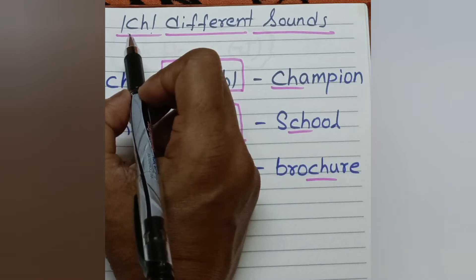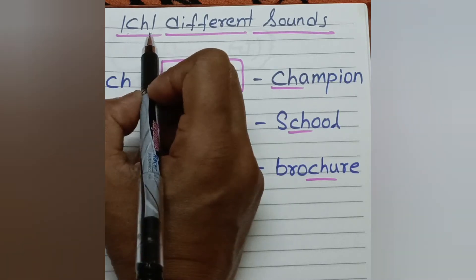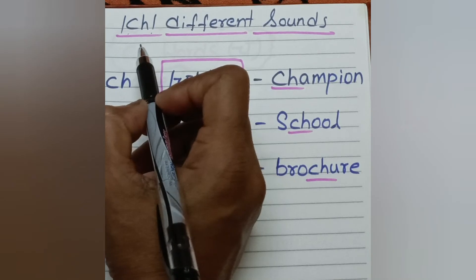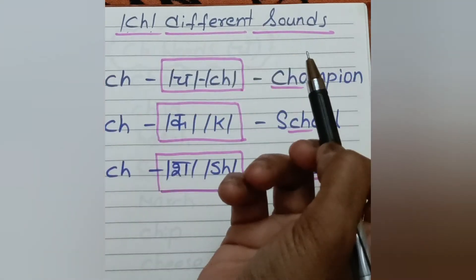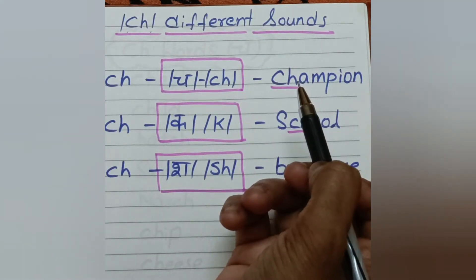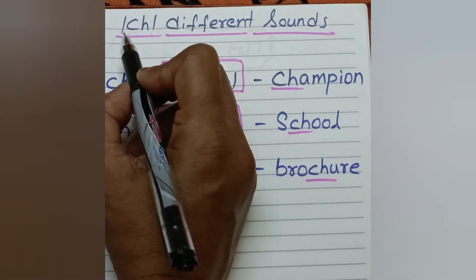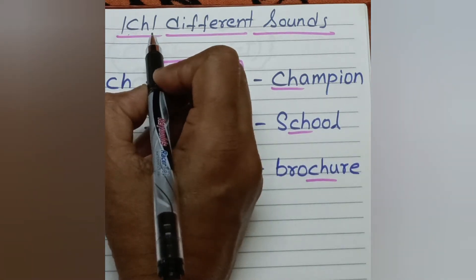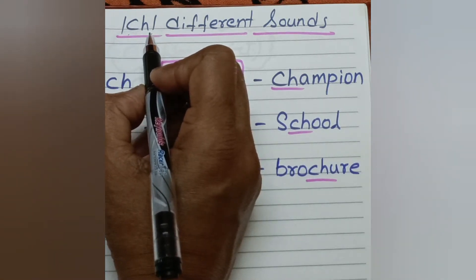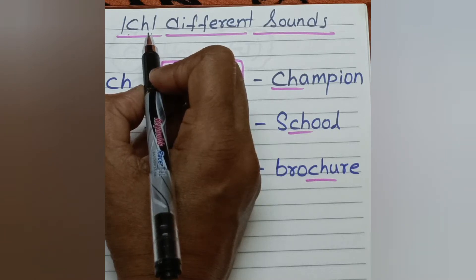In many words, CH sound is CH. But other than CH, there are two different sounds. Please do watch till the end. This is an informative video, so don't miss.